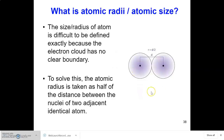For example, let's say these two atoms are chlorine atoms, and the bond length between the two chlorine nuclei is 198 picometers. Therefore, the atomic radius of chlorine is half of 198 picometers, which gives us 99 picometers.